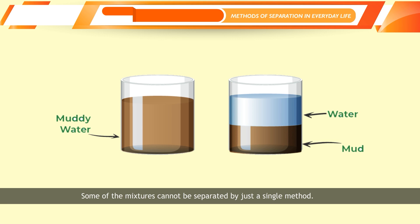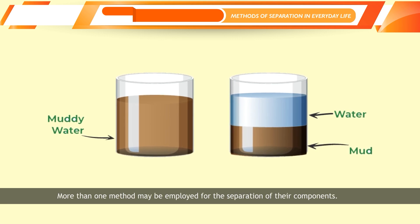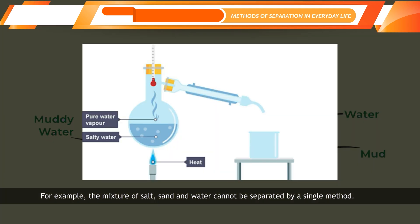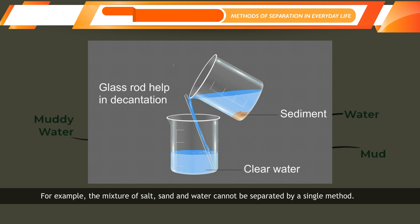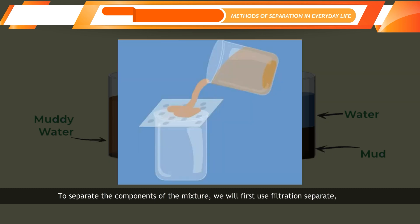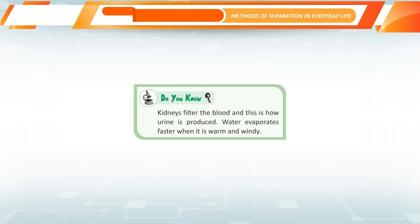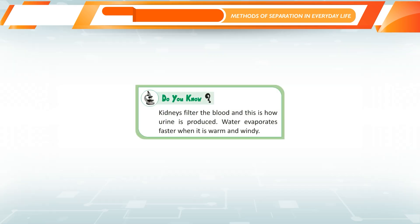Separation Using More Than One Method: Some mixtures cannot be separated by just a single method; more than one method may be employed. For example, a mixture of salt, sand and water cannot be separated by a single method. We first use filtration to separate sand from the mixture, then evaporate the filtrate to obtain the salt, and the vapors of water can be condensed to obtain water in liquid form. Kidneys filter the blood and this is how urine is produced. Water evaporates faster when it is warm and windy.